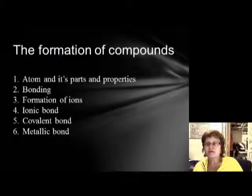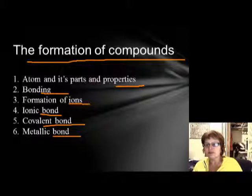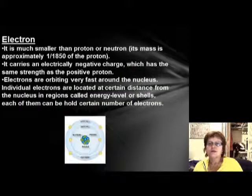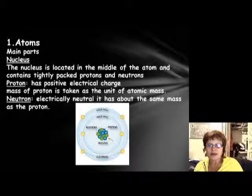Now we're going to talk about the formation of compounds. First of all, the atoms and its parts—how do they bond? The formation of ions, ionic bond, covalent bond, and metallic bond. The atom has two main parts, one is the nucleus, which is right here in the middle of the atom. In the nucleus we have two kinds of particles: the protons and the neutrons.